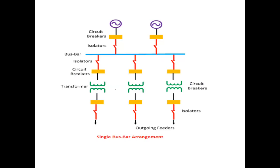In the single bus bar scheme, only one bus bar is connected. Circuit breakers and isolators are used to disconnect the bus bar. Isolators are not simply switches — the circuit breaker automatically opens under fault conditions. The bus bar is made with aluminium hollow cylindrical structure and is mechanically strong. Only one bus bar is placed, connected to circuit breakers, transformers, and outgoing feeders.